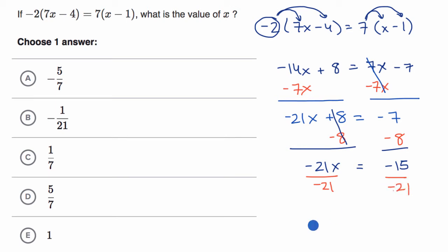And we are going to be left with x is equal to, now if you divide a negative by a negative, you're going to get a positive. So this is the same thing as 15 21sts. But we can rewrite this expression, especially because we're not seeing 15 21sts here.